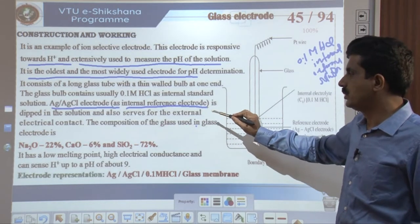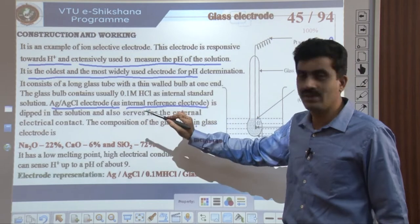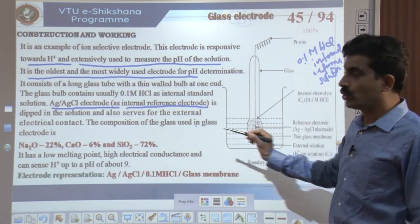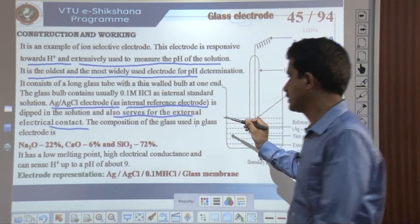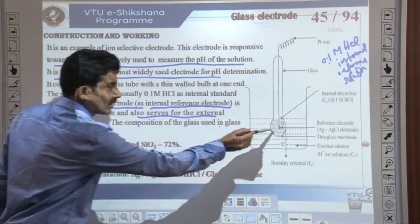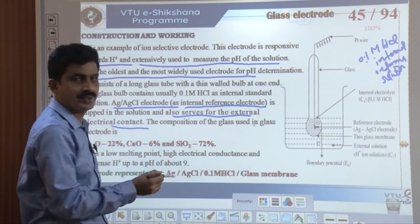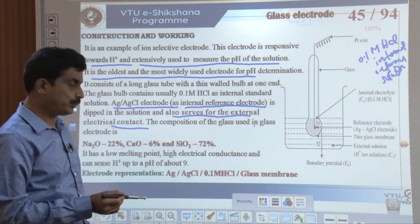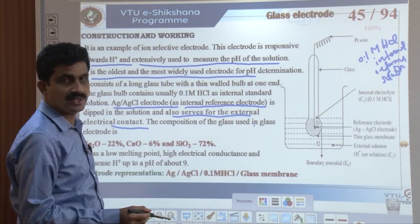The Ag/AgCl electrode is used as the internal reference electrode and also serves for the external electrical contact. The composition of the glass membrane is: Na₂O 22%, CaO 6%, and SiO₂ 72%. This composition gives low melting point, high electrical conductance, and can sense H⁺ ions up to a pH of about 9.